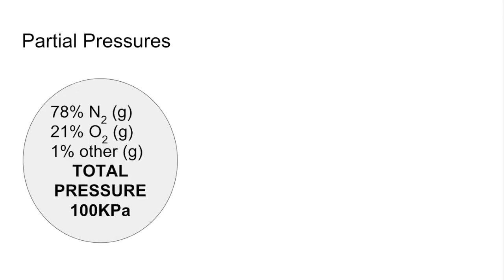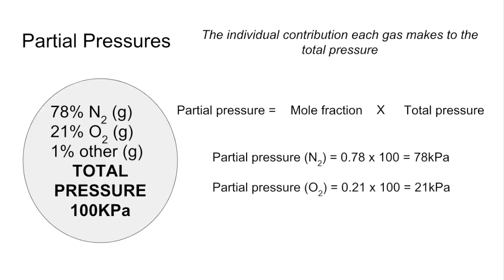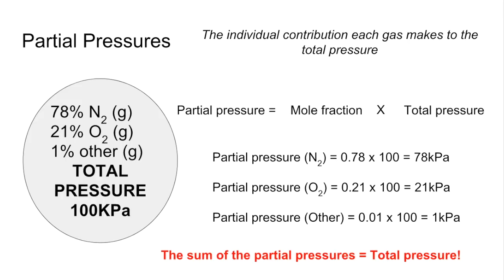So partial pressures now. The total pressure of a gas comes from the individual partial pressures of the components. So the individual contribution each gas makes to the total pressure is the partial pressure. So how do we work that out? We take the mole fraction that we've just calculated and multiply that by the total pressure. So for the three components of air, we're going to get 78 kilopascals, 21 kilopascals, and 1 kilopascal. And another quick check you can do is that the sum of the partial pressures needs to equal the total pressure.